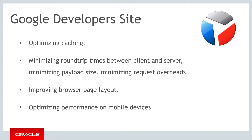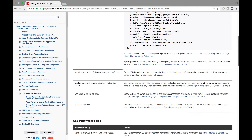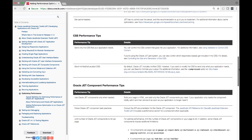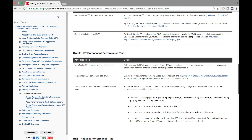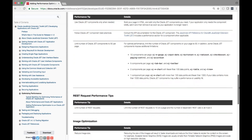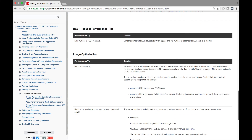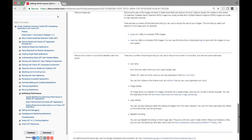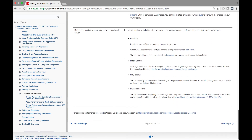Most of these recommendations are up to you to implement, but JET itself includes features that can reduce the payload size and the number of trips to retrieve the JET application CSS. The JET developer guide contains a list of performance optimizations applicable to JET applications. You should definitely take a look at this long list of tips and tricks.